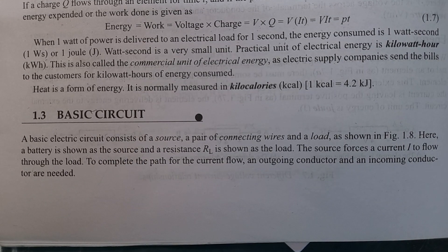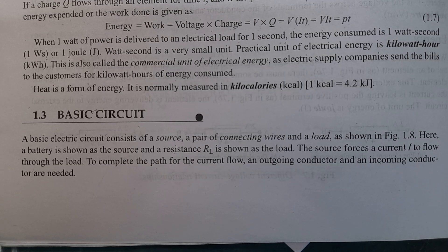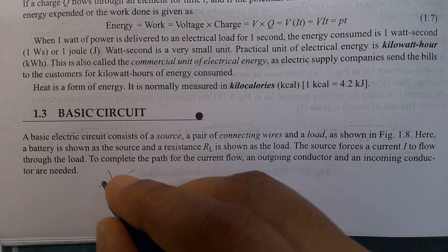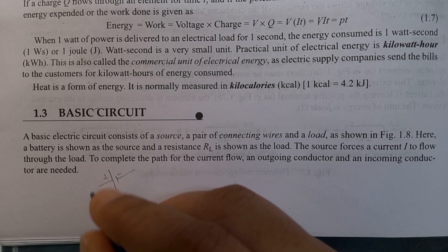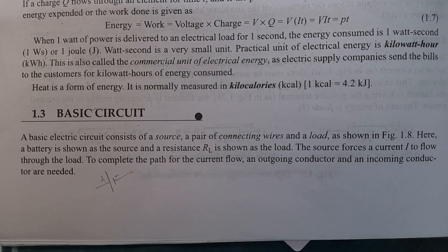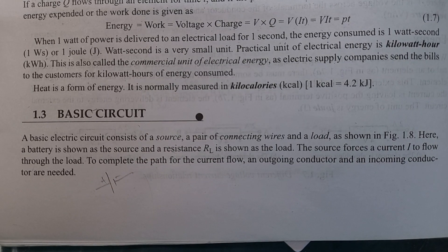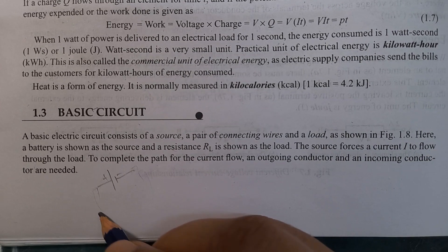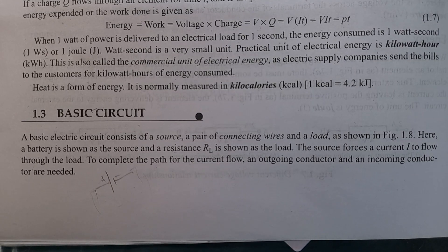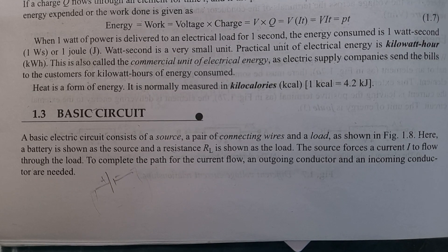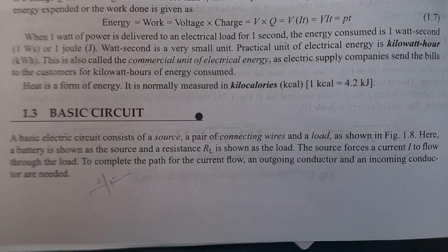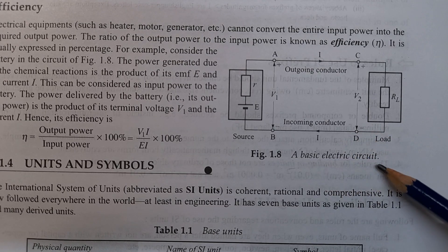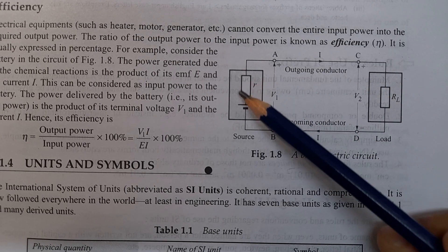A basic electric circuit consists of a source — with plus and minus on the voltage source — a pair of connecting wires, and a load. As shown in Figure 1.8, this is the basic electric circuit.